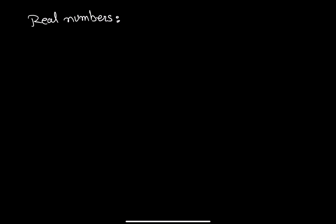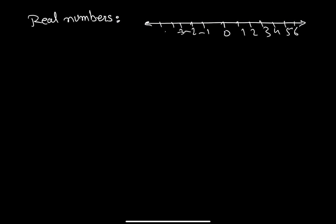We'll talk about real numbers here. Real numbers are all those numbers that can be expressed on the number line. Pick any number and put it on this line — that is called a real number: 1, 2, 3, 4, 5, 6, negative 1, negative 2, negative 3, negative 4, negative 5, negative half, one half. These are all real numbers that can be expressed on the number line.